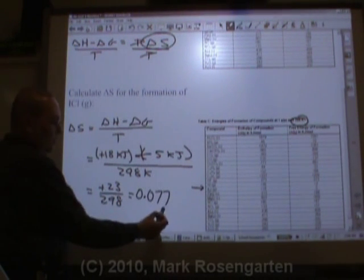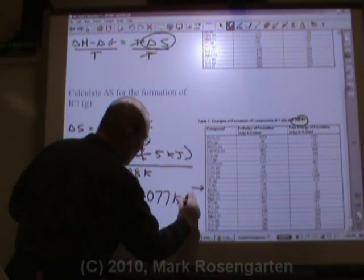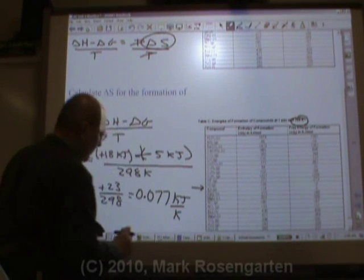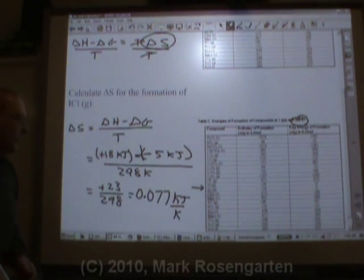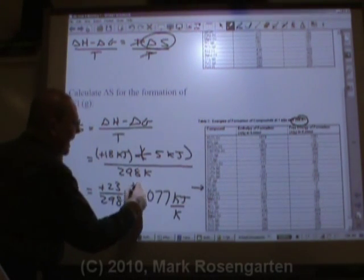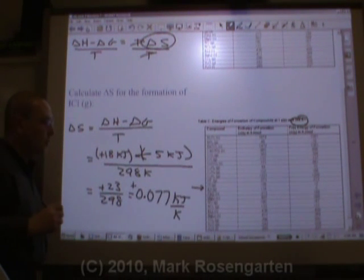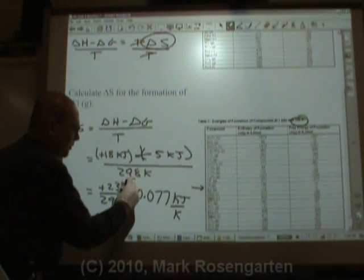0.077, two sig figs, kilojoules per Kelvin. More importantly, it's positive 0.077 kilojoules per Kelvin.